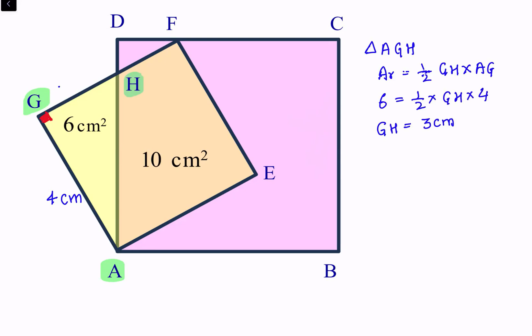So GH is 3 centimeter, and in the same triangle if we use Pythagoras theorem, the value of AH will be 5 centimeter. So AH is 5 centimeter by Pythagoras theorem.